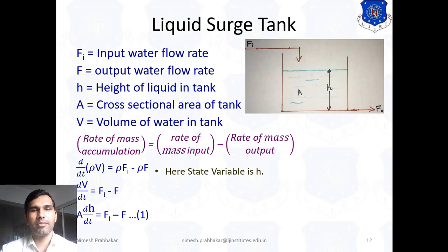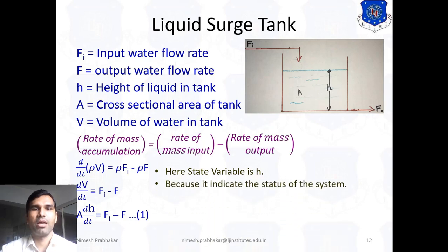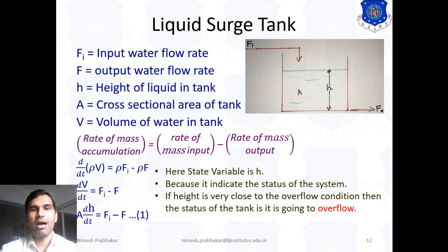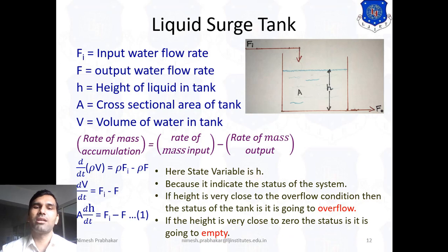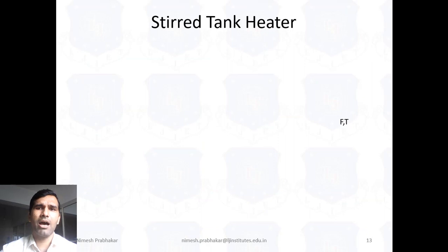Here, the state variable is H because it indicates the state of the process — the state of the system. If the height is very close to the overflow condition, the status of the tank is that it is going to overflow. If the height is very close to zero, the state is that it is going to empty. So H indicates the state of the process.